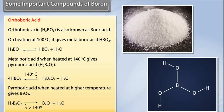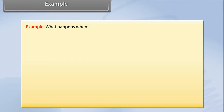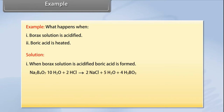Orthoboric acid is a very weak acid, but it can function as a strong monobasic acid in the presence of a polyhydric alcohol, due to the formation of an anionic complex (borospiranic acid), and liberates H⁺ ions. When boric solution is acidified, boric acid is formed. When boric acid is heated, boron sesquioxide is formed.